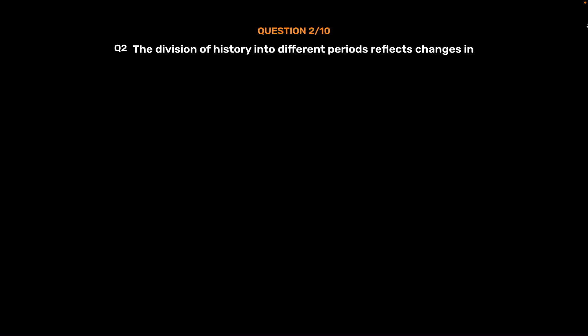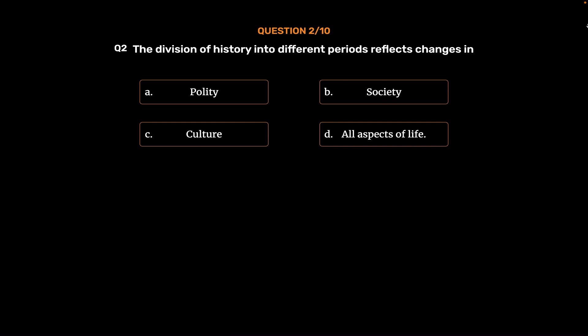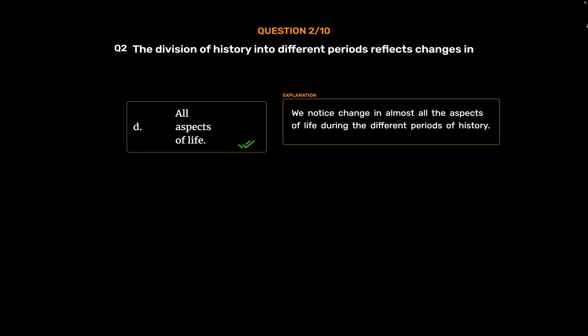Question No. 2. The division of history into different periods reflects changes in: Option A: Polity. Option B: Society. Option C: Culture. Option D: All aspects of life. The correct answer is Option D: All aspects of life. We notice change in almost all the aspects of life during the different periods of history.